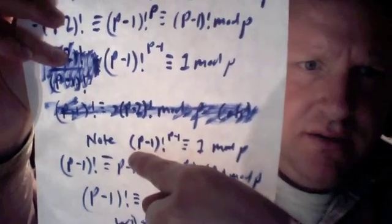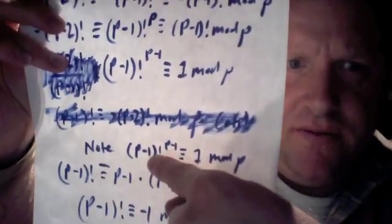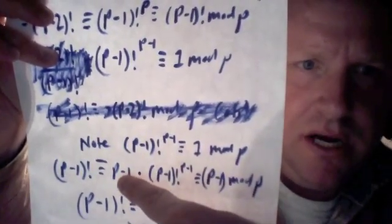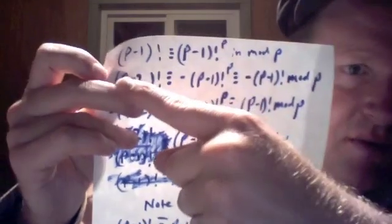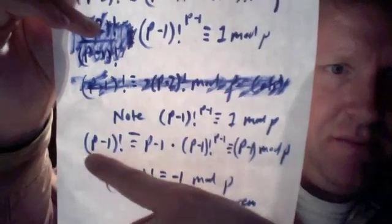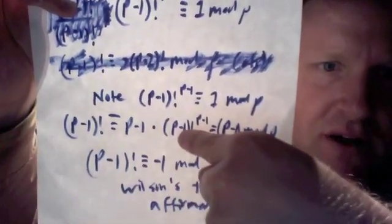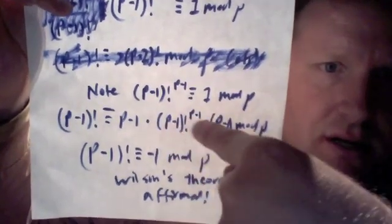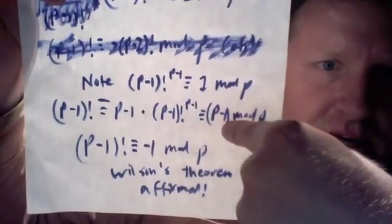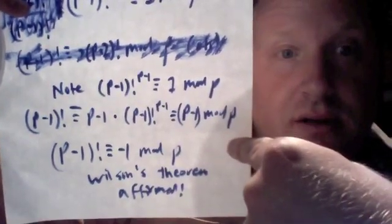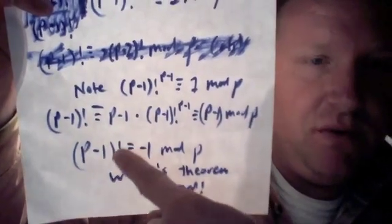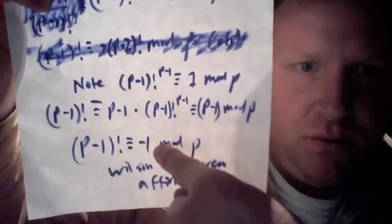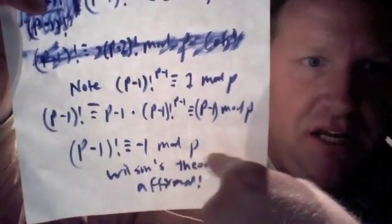Something very interesting arises. (p-1)! to the power of p-1, multiplied by p-1, gives me (p-1)! to the power of p, and that gets me (p-1)!. Note that this 1 mod p has to be multiplied by p-1, and that gets me p-1 mod p. By the transitive property, I now know that (p-1)! is equivalent to p-1 mod p, which is equivalent to -1 mod p. And that's Wilson's Theorem, right there.